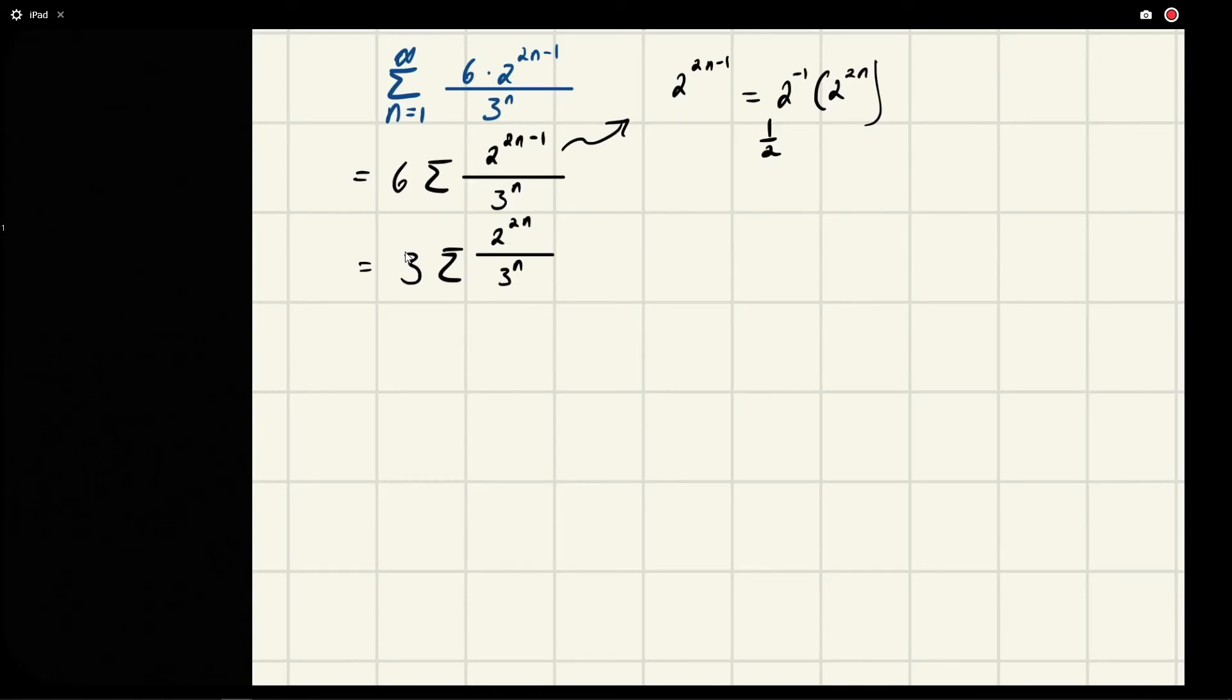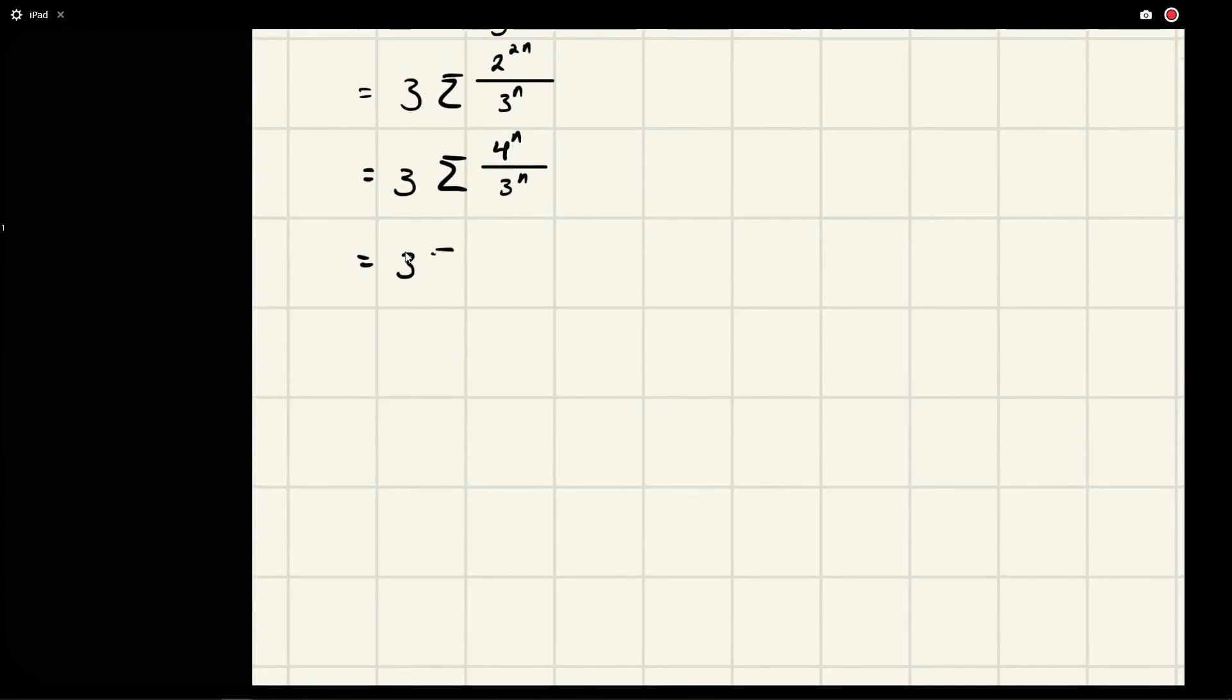So this becomes 3 times 4^n over 3^n. Now they have the same power of n, and so we can say that this is 3 times—and then we get four-thirds raised to the n. At this point, the red flag should go off.